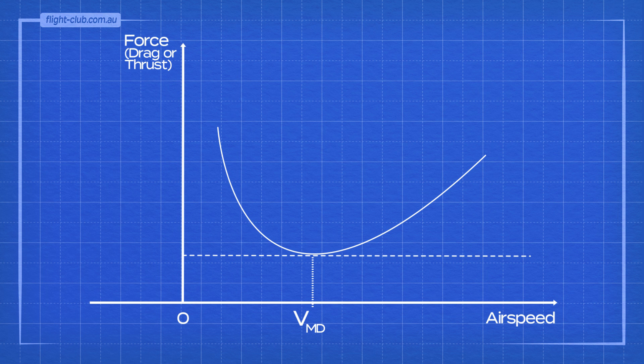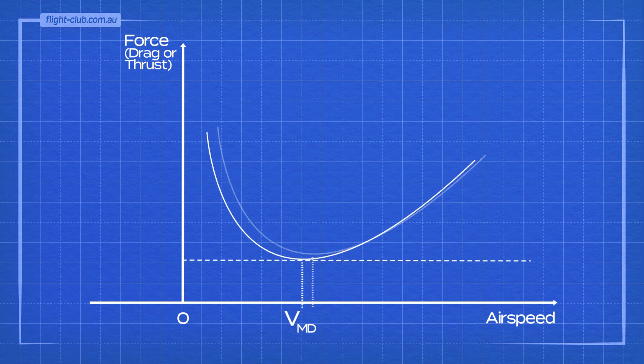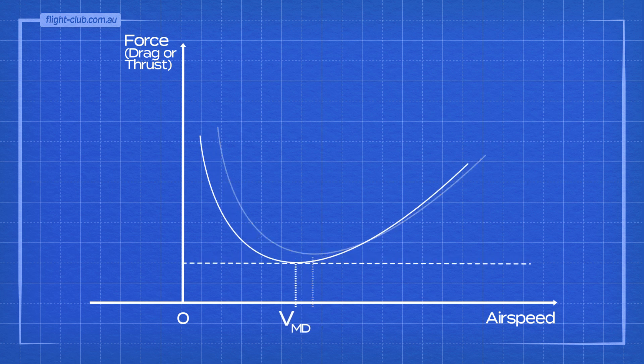As fuel is burned during the flight, the aeroplane's weight reduces and the drag curve moves down and left, resulting in a reduced maximum endurance airspeed. The angle of attack for maximum endurance does not change, but the airspeed at which this angle of attack is achieved depends on weight and altitude.